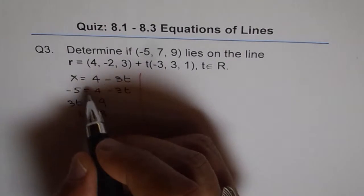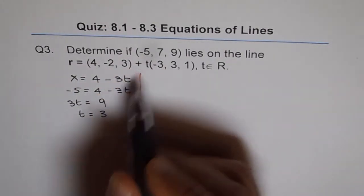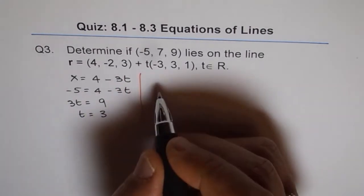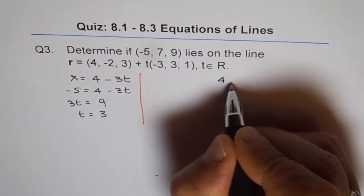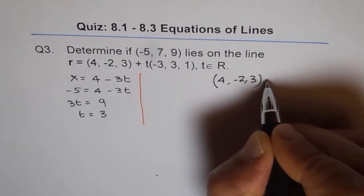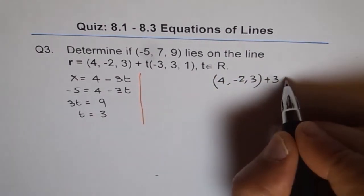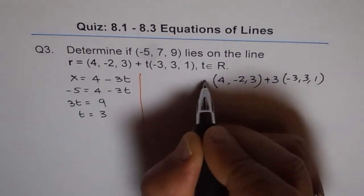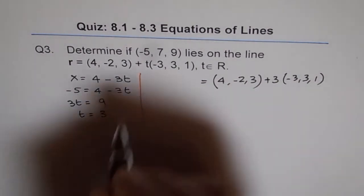We already found that if I put 3 as t it will give me a check. So if I write t as 3, let me write it like this: (4, -2, 3) + 3(-3, 3, 1) and see what values of r or x, y, z do I get.